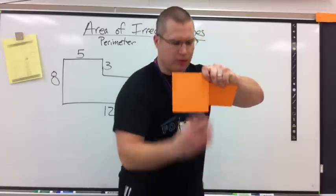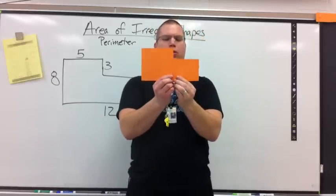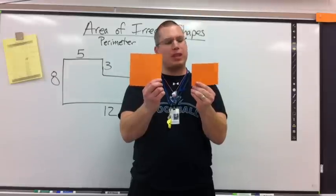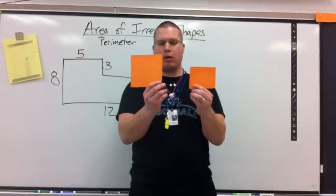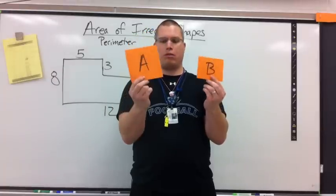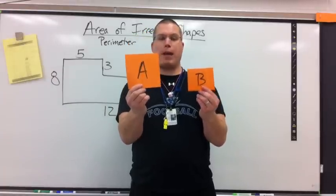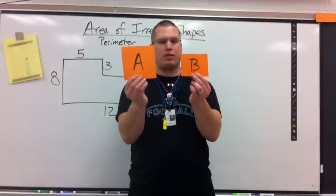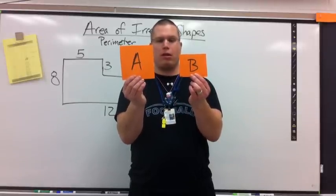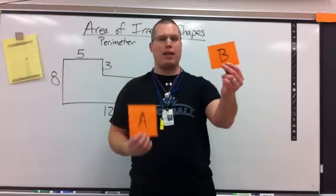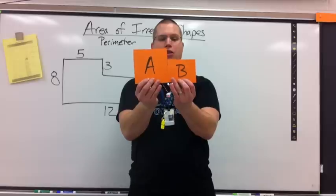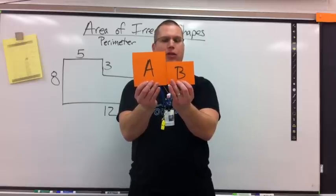Now if you notice, I have not lost any cardboard, so it's still the same shape. But what I did is I broke it into two shapes I do know the formula for. You can call it shape A and shape B. They're both rectangular. This probably looks more like a square than this does. Find the area of this, find the area of this, join them back together, and you are done. You have found the total area of this shape.